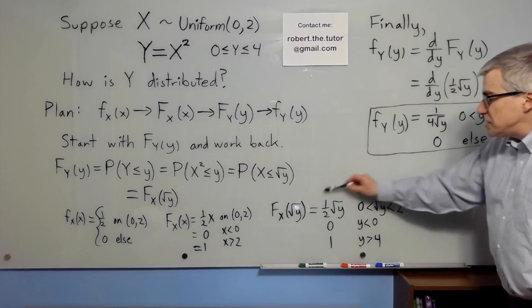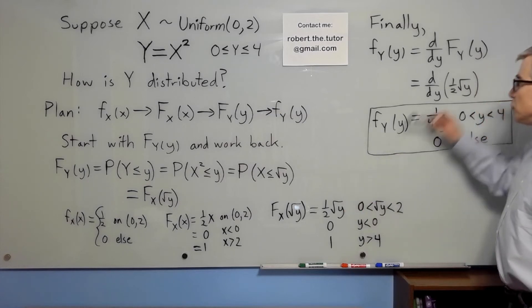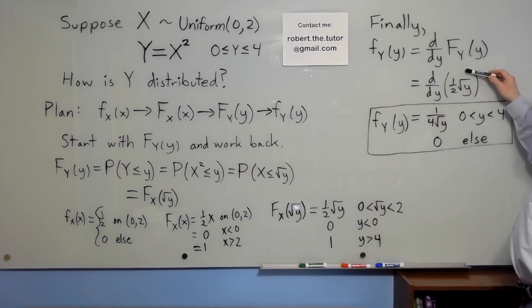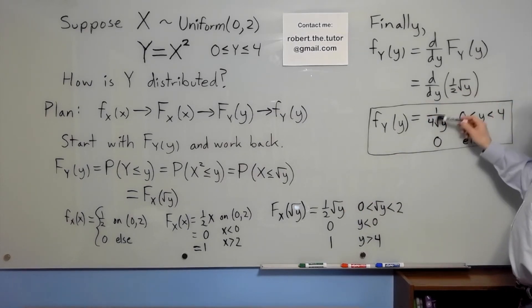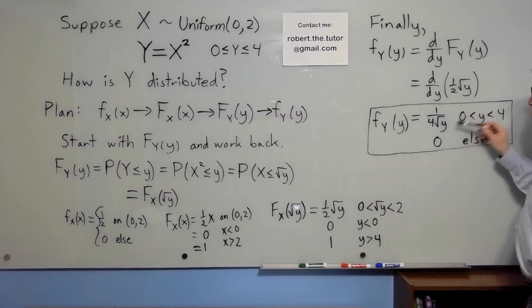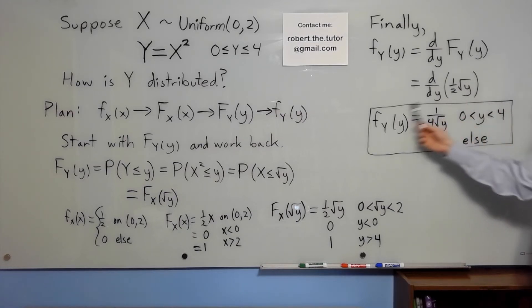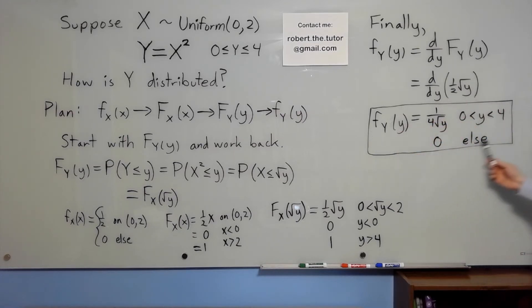Finally, we can take the derivative of one-half square root of y to get one over four square root of y for y between zero and four. And that, finally, is the density function for y.